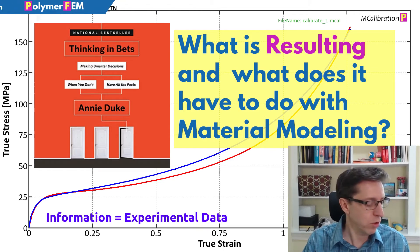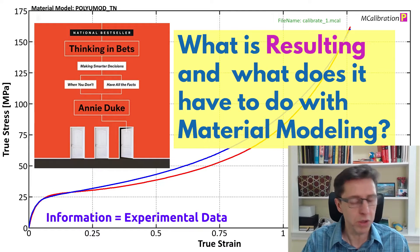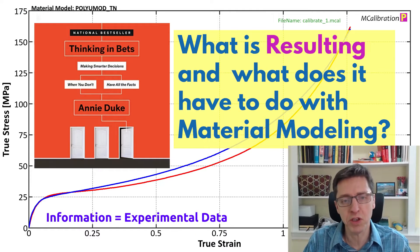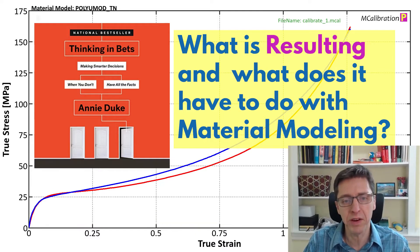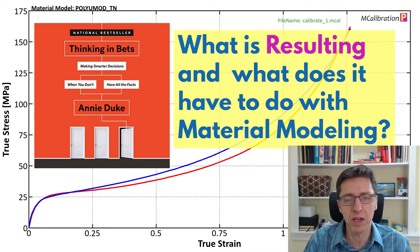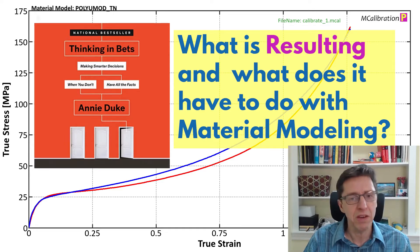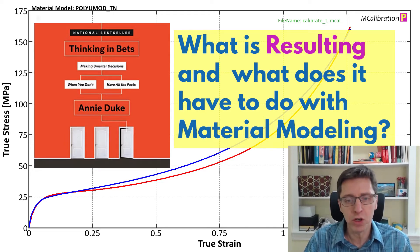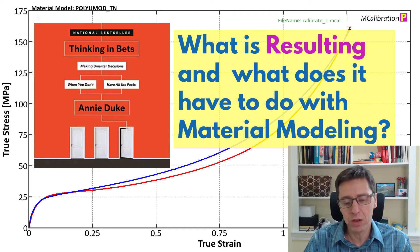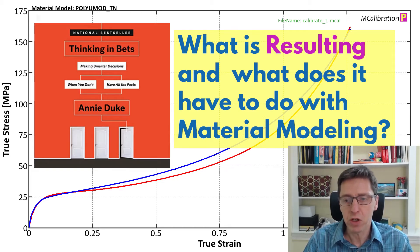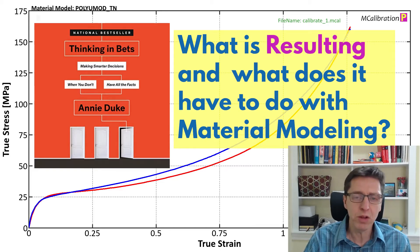Annie Duke, who wrote this book, was a professional poker player. One of her examples is that when you play poker, you may have a really good hand of cards and make a really good play with those cards, but you may still lose.